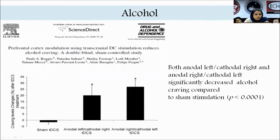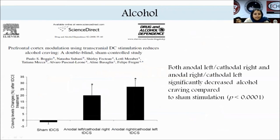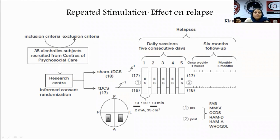For alcohol, a study by Boggio et al recruited 35 alcoholic subjects. Both anodal left/cathodal right and anodal right/cathodal left stimulation significantly decreased alcohol craving compared to sham stimulation. Sham stimulation involves only a brief period of actual current — the rest of the time patients receive no stimulation — to rule out placebo effects. 18 subjects were under sham tDCS and 17 under actual tDCS, with daily sessions for five consecutive days.